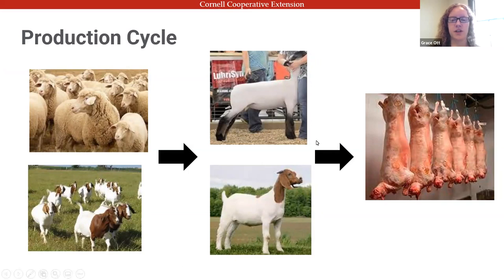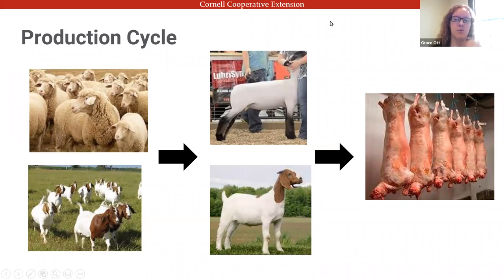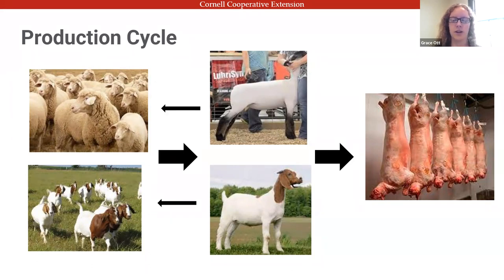Once they're slaughtered, the meat can be marketed directly or sold through auctions. Of course, you always need animals staying in the herd — females, or if you're keeping rams and bucks for breeding, they'll come back to replace older ewes and does as they become less productive or develop other problems.